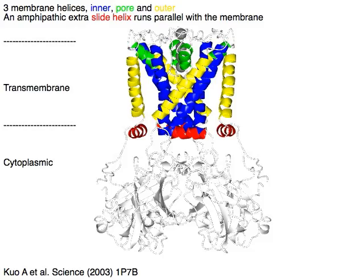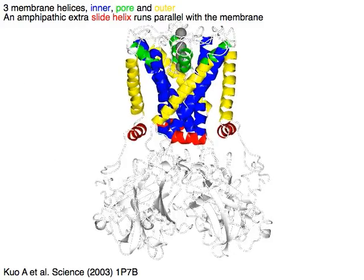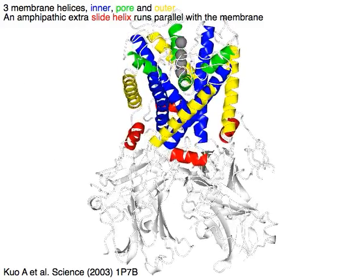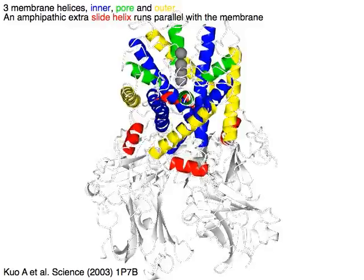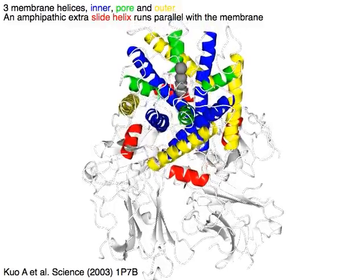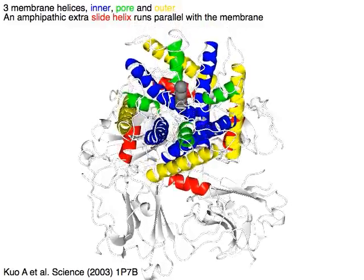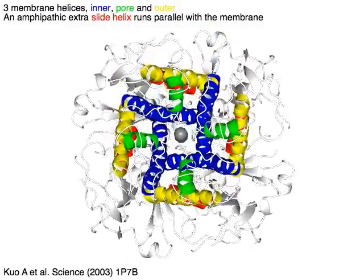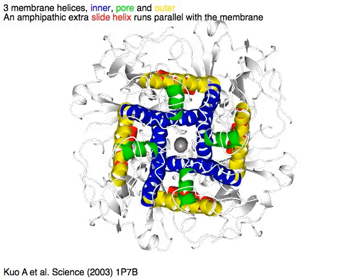Three membrane helices: inner helix in blue, pore helix in green, and outer helix in yellow. An amphipathic extra slide helix in red runs parallel with the membrane.